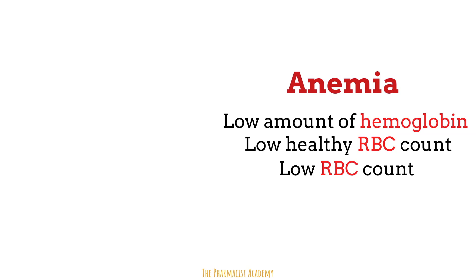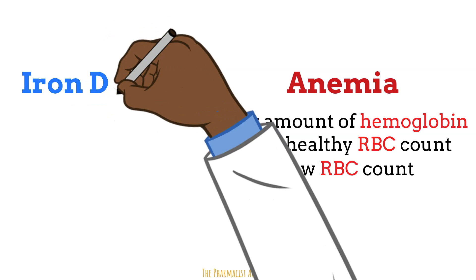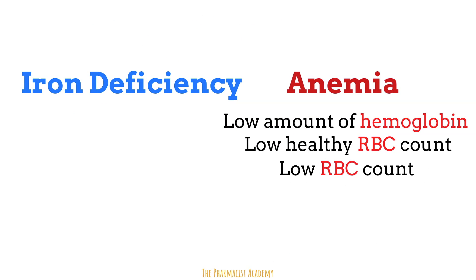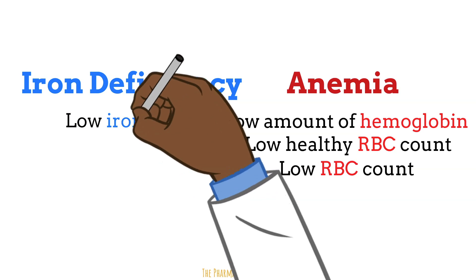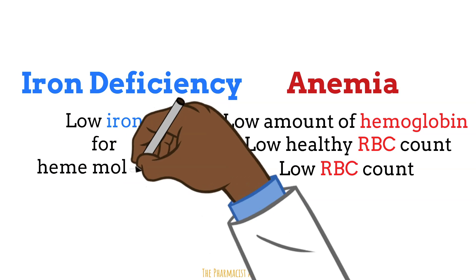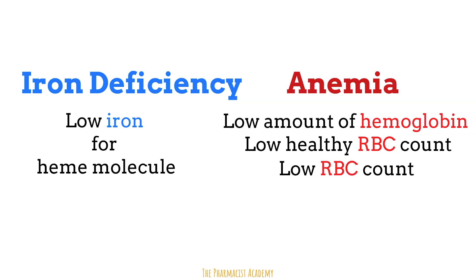Let's go back to the definition of anemia and incorporate iron deficiency into it. Being iron deficient means you have low iron in the body. When that happens, you will have low iron for the heme molecule. If my iron is low, the body will make less of the heme molecule needed for the hemoglobin, which is crucial for the red blood cells and binding of oxygen. Because of this, we get less healthy red blood cells and less red blood cells overall.